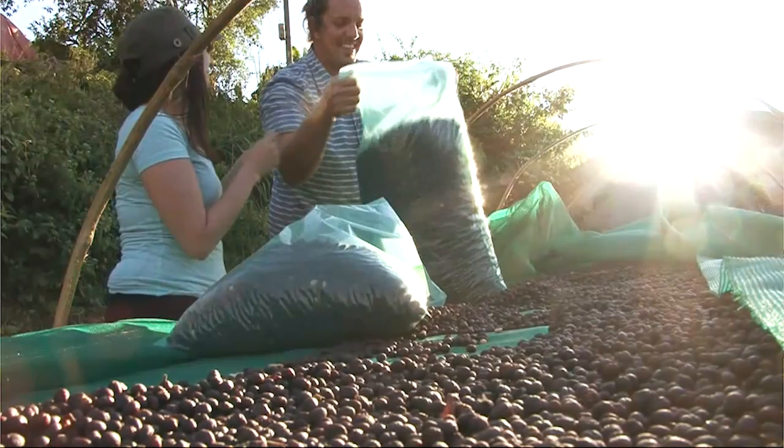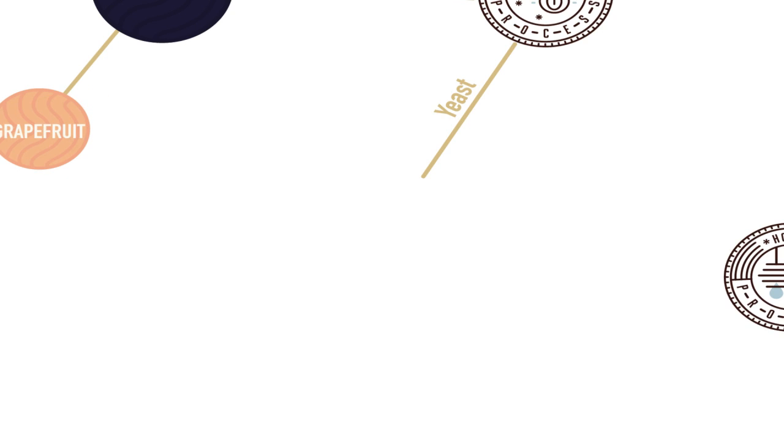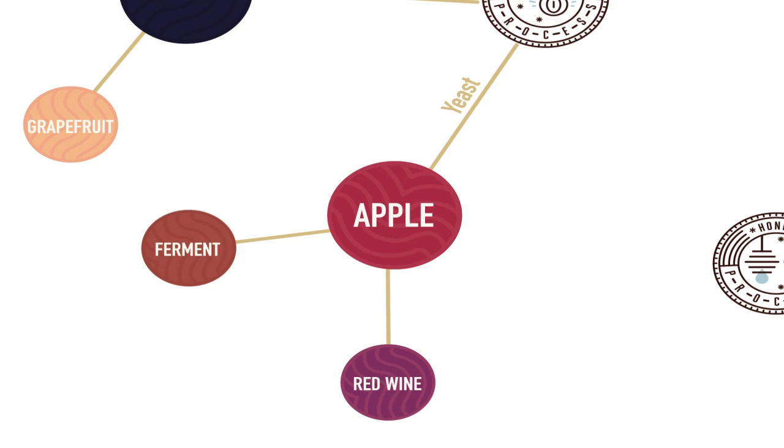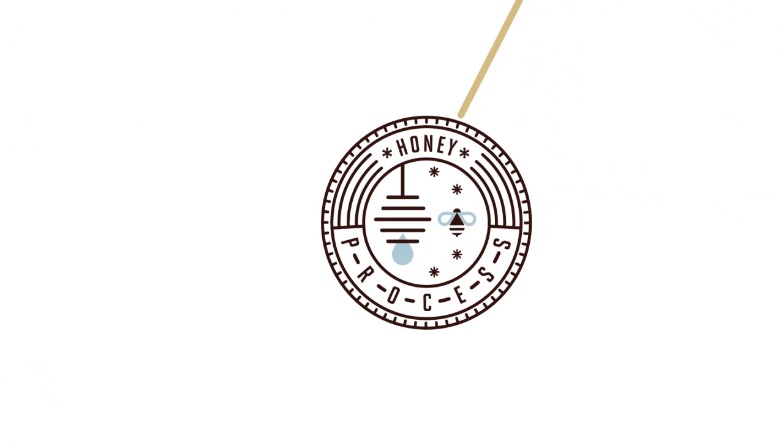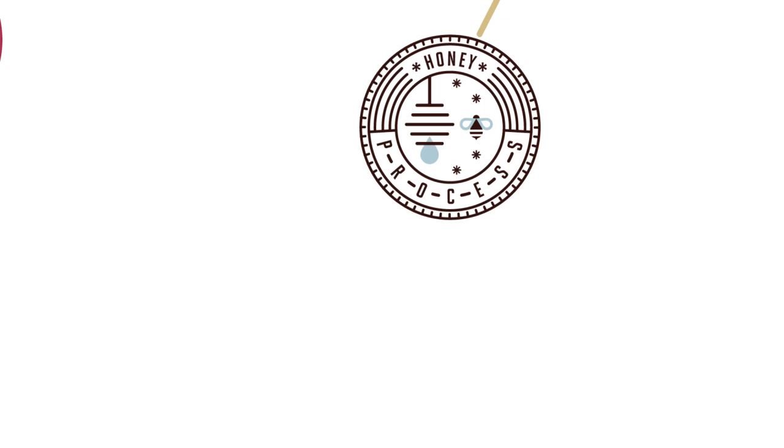With these coffees, we got amazing flavor characteristics like apple, red wine, and ferment. A lot of people really love these yeast fermented naturals. Now let's look at honey process coffee. With honey process, you really have three options: yellow honeys, red honeys, or black honeys.